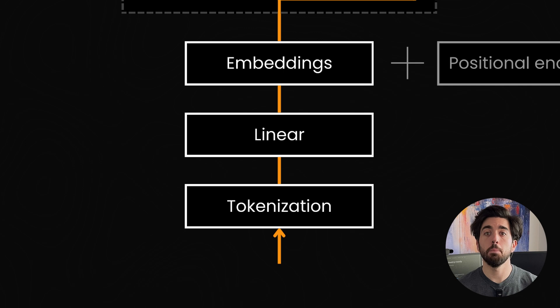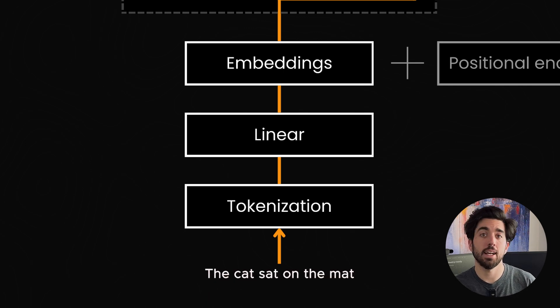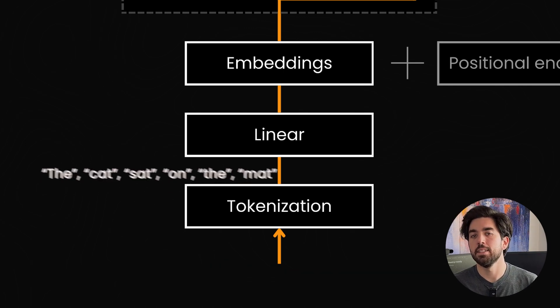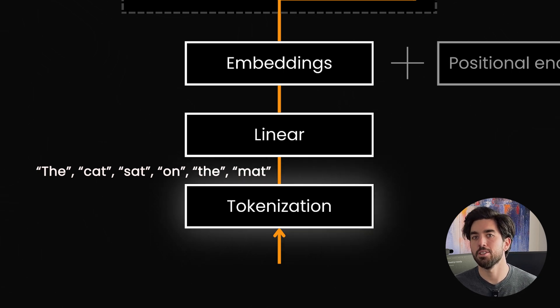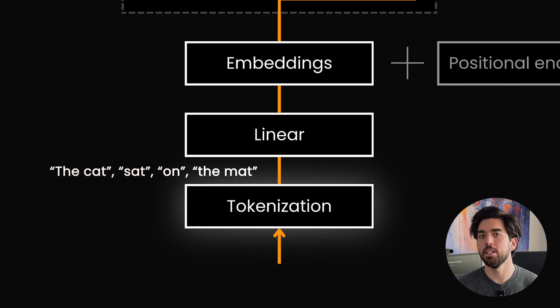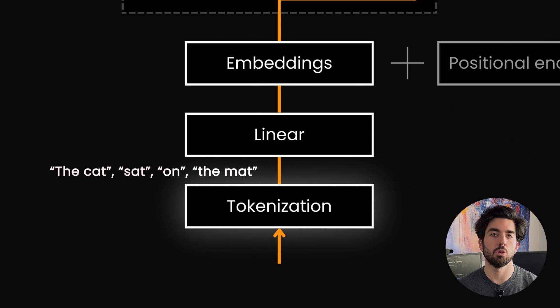But before we get into all that fancy stuff, let's go back to how we turn raw text into something a neural network can understand. The model can't just read letters like a human can — it needs everything to be in numbers. So we break text down into pieces called tokens. If you have a sentence like "the cat sat on the mat," you might split it into one token per word. Usually these tokens are words, but depending on the tokenizer — the program that splits text into tokens — they can be smaller pieces like subwords or even individual characters. The important part is that the model sees a sequence of tokens and not just raw letters.